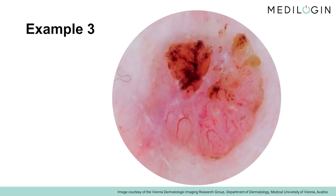Let us now switch to another example. In this example, the characteristic criteria for a basal cell carcinoma are particularly interesting. The only pattern present is one made up of lines. Here, you can also recognize the spoke wheel, that is, the common base and radial lines extending from it. Since the lesion is predominantly skin-colored, the vessels can be assessed easily.